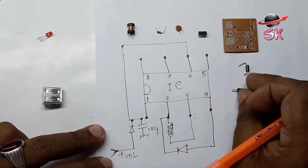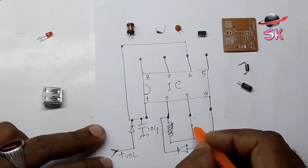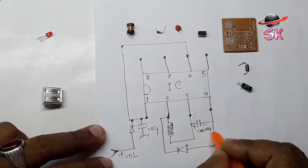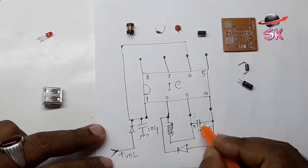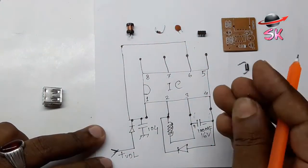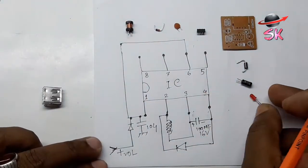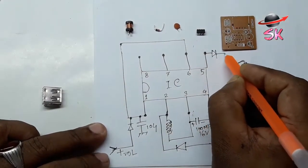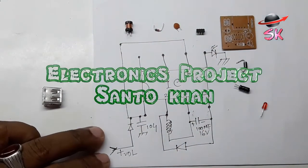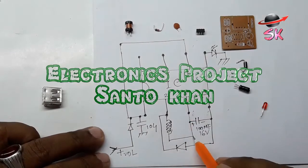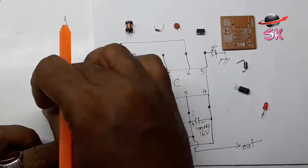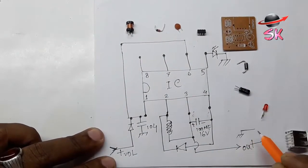Electrolytic capacitor. LED bulb. LED bulb — IC3 pin number output volt.